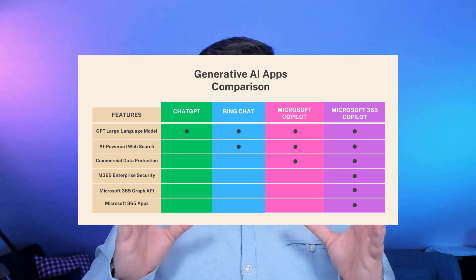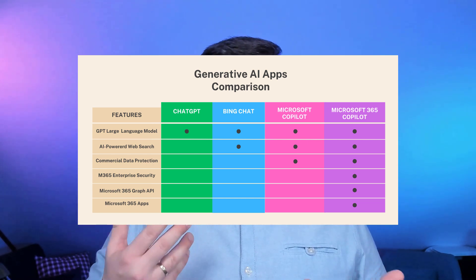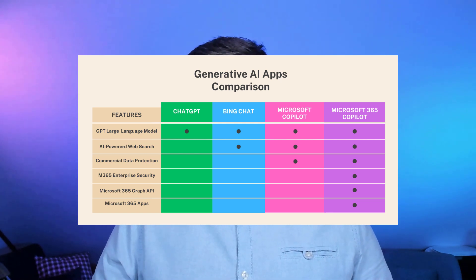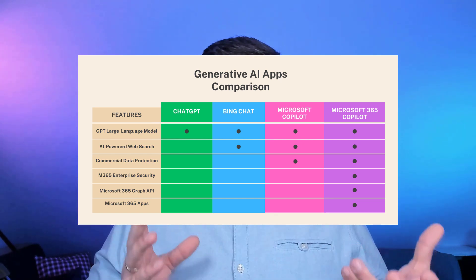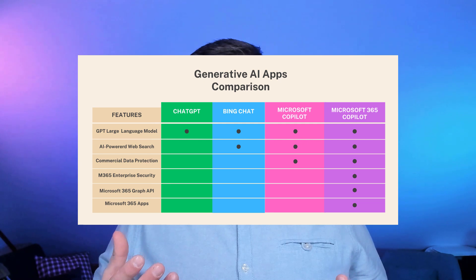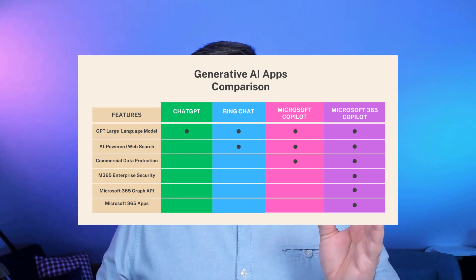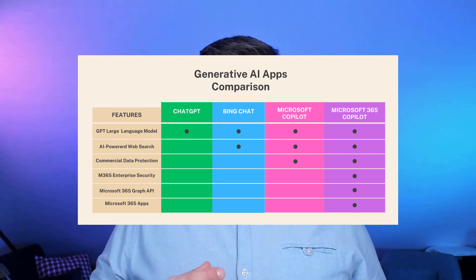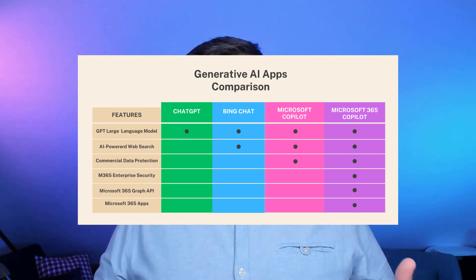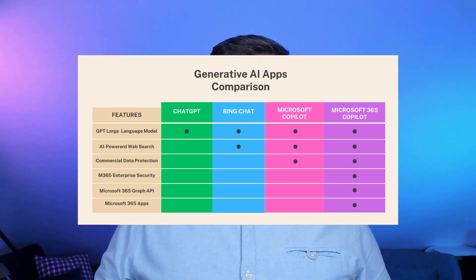OpenAI ChatGPT is a public service. Your data is shared with OpenAI, and the large language model learns based on the data you put there. This is very important because if your business users use your organization's data, your competitors can get better results thanks to that. ChatGPT could be a perfect solution for personal use, but if you are a large enterprise organization, there is a risk of losing some intellectual property.